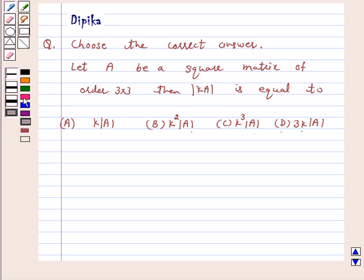Let us write the solution. We know that if each element of a row or column of a determinant is multiplied by a constant K, then its value gets multiplied by K.